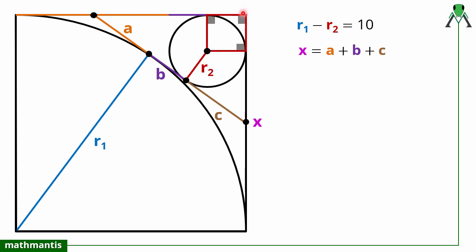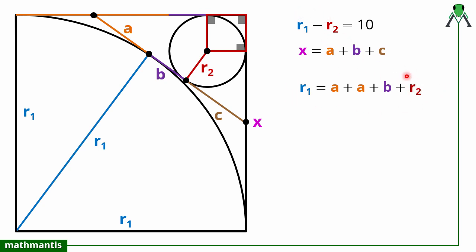Now we can make an equation. This length is r2, this is a plus b, and this is a. This is a quarter circle of radius r1, so this total length is r1, which I can write as a plus (a plus b) plus r2. From here we can see that r1 minus r2 equals 10, so the first equation is: r1 minus r2 equals 2a plus b.